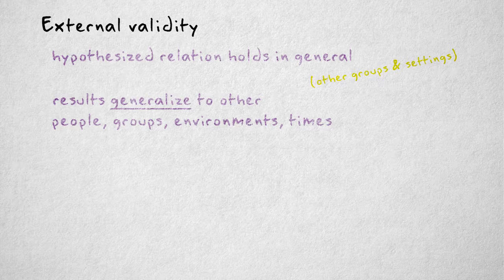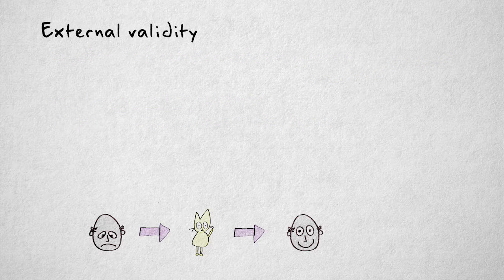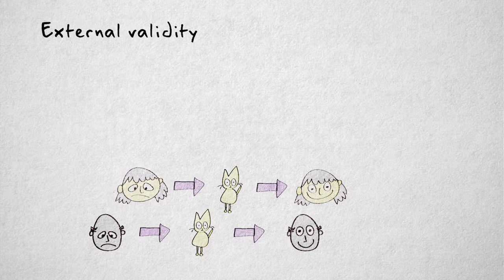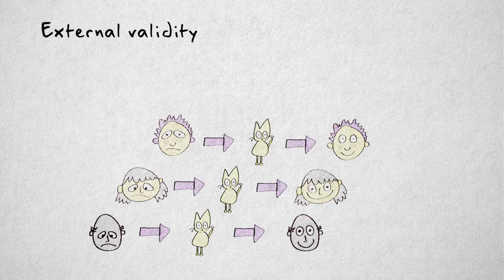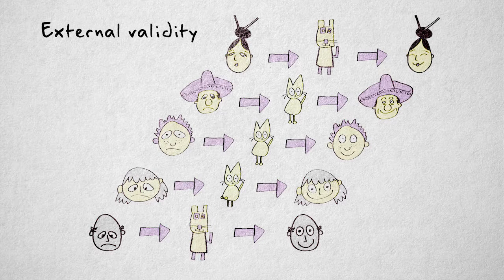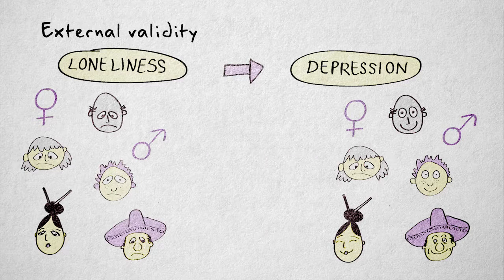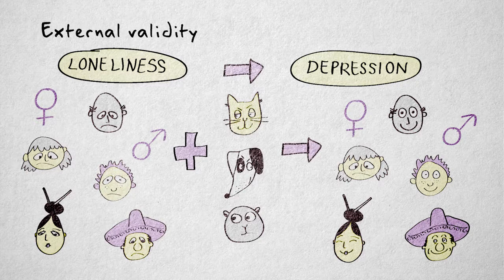In other words, if the results generalize to different people, groups, environments, and times. Will taking care of a cat decrease depression in teenagers and middle-aged people too? Will the effect be the same for men and women? What about people from different cultures? Will a dog be as effective as a cat? Of course, this is all hard to say based on the results of only elderly people and cats. If we had included younger people, people from different cultural backgrounds, and used other animals, we might have been more confident about the study's external validity.